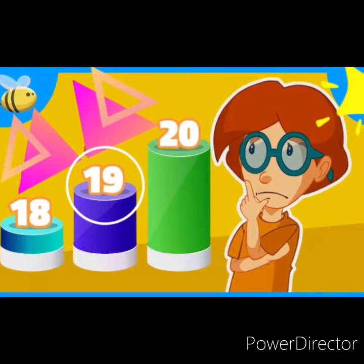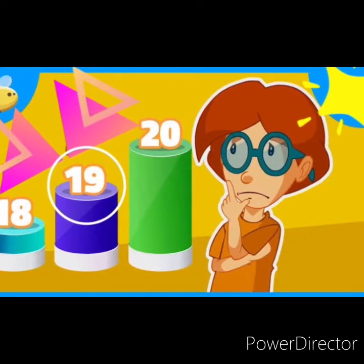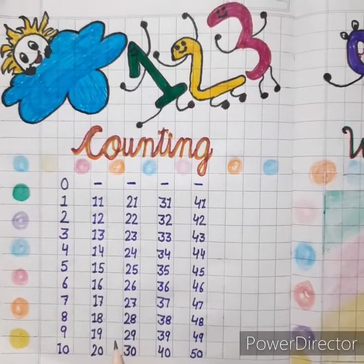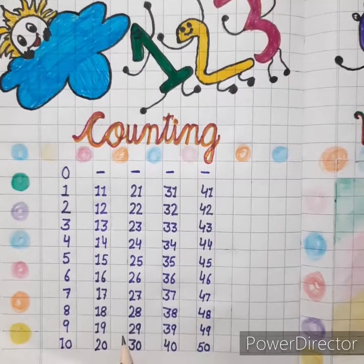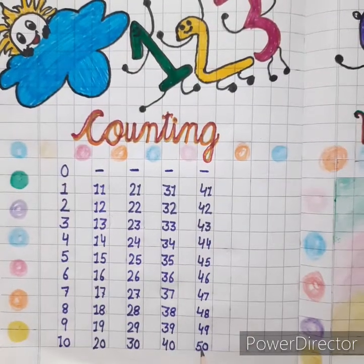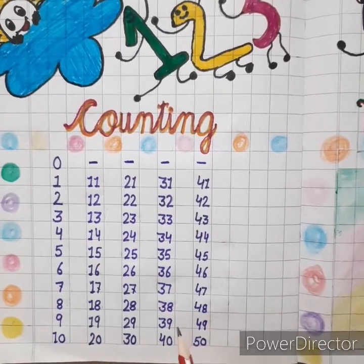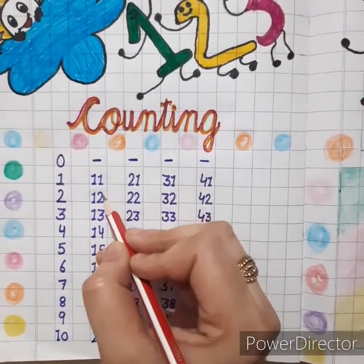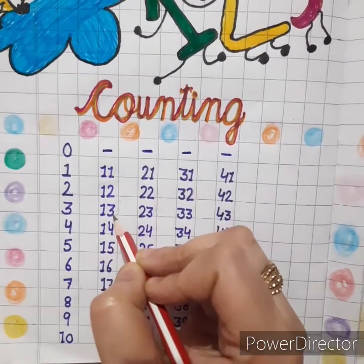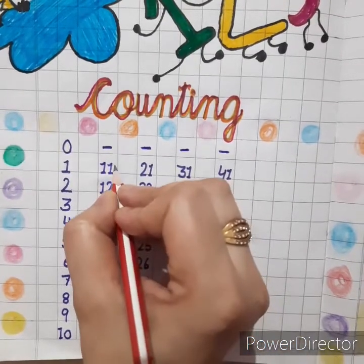For doing between numbers, it is important that we move forward counting. So let's start. Kids, here I have written forward counting from 0 to 50. Now I am explaining you with an example. Kids, see — this is 11, 12, and 13. So in these three numbers, see which is the between or middle number.